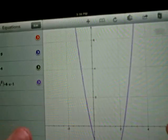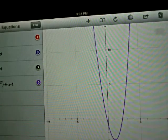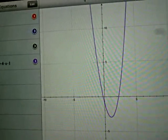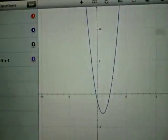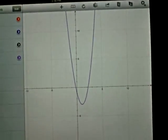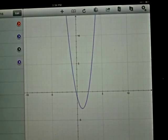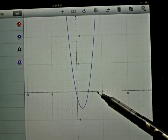So let's look at our graph here. We can see that the graph goes through. It's important to know that the solutions are where the graph crosses the x-axis.